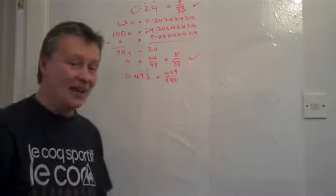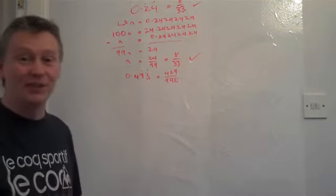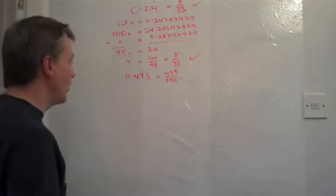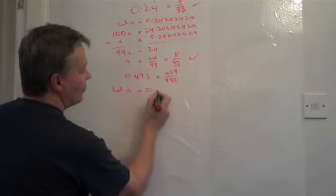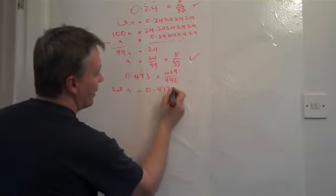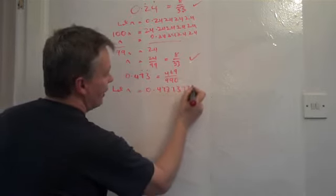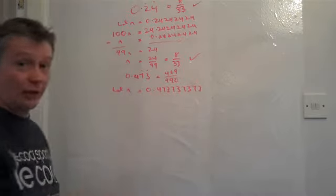Well, that's a little bit trickier, but the same principles apply. OK. So what I've said is, let N equal 0.4737373 and so on recurring.